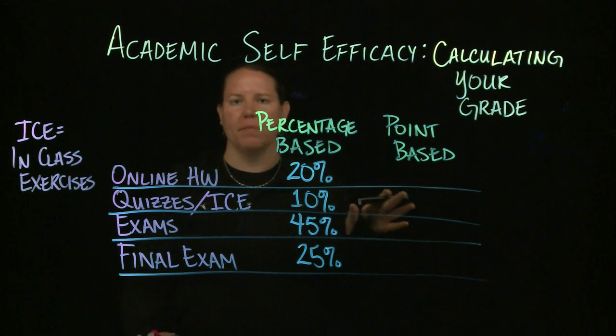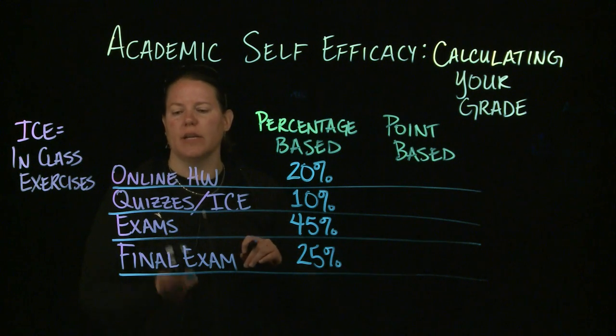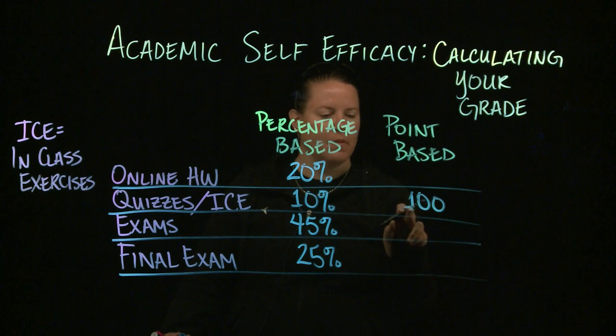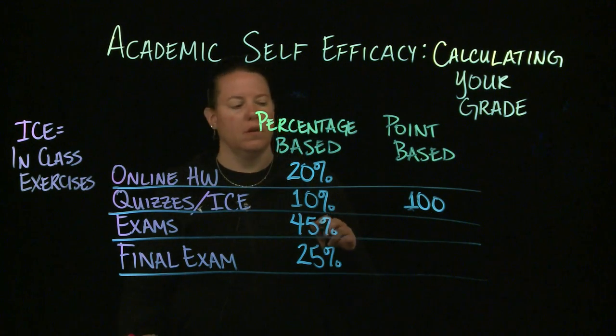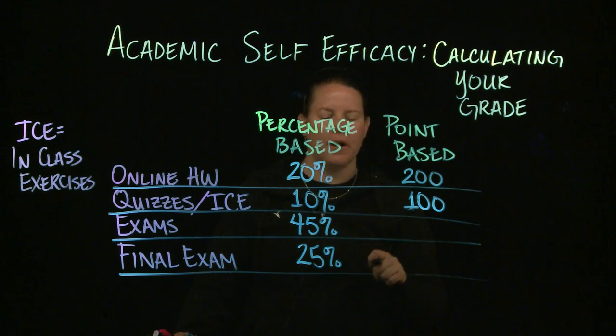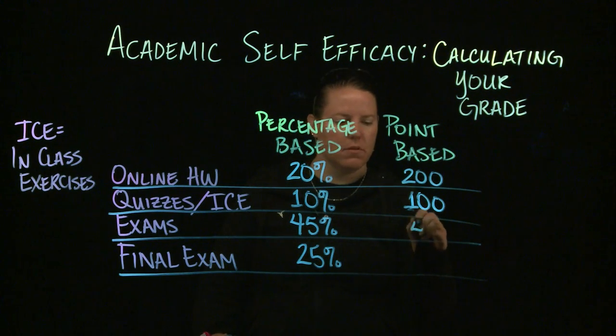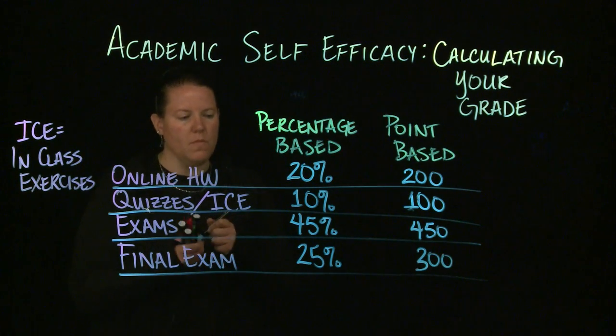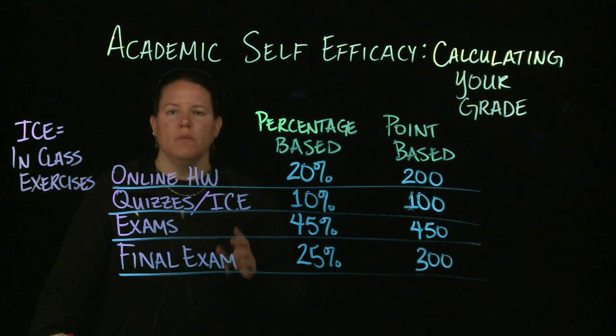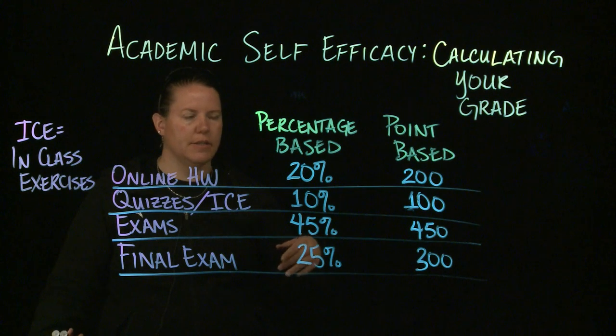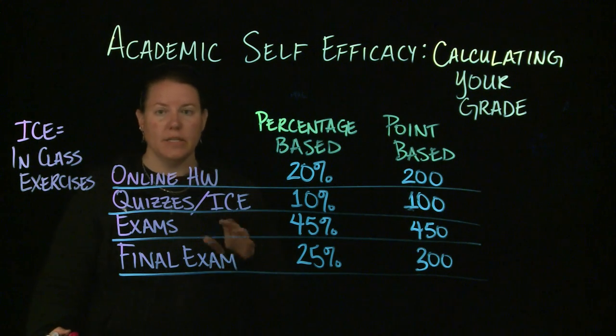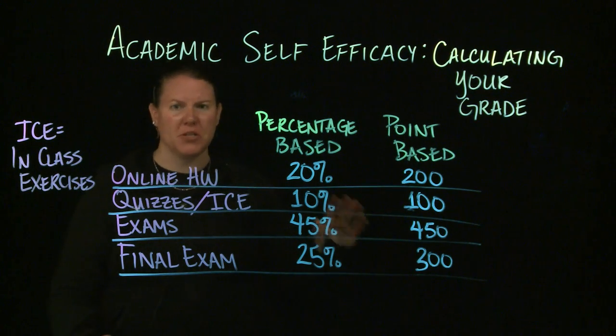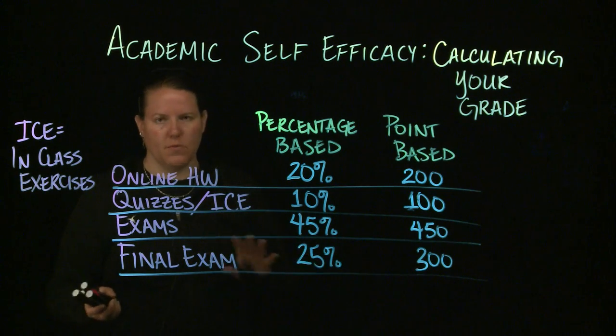Point-based just means that they're assigning a total number of points to that. Often mathematicians do this because they're going to count each quiz as like 10 points. You have 10 quizzes that counts for 100 points. The online homework maybe is 200 points, you have exams which are 450 points, and the final exam is worth 300 points. Point-based is basically the exact same idea as percentage-based in many ways. I tend to do percentage-based because that gives me flexibility for dropping the lowest scores.